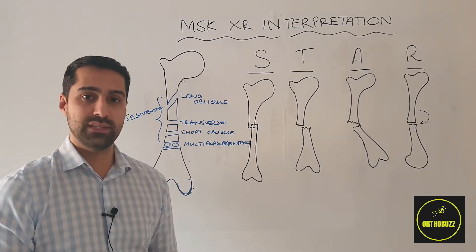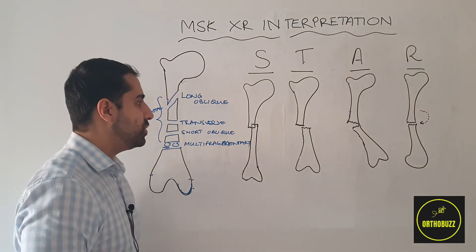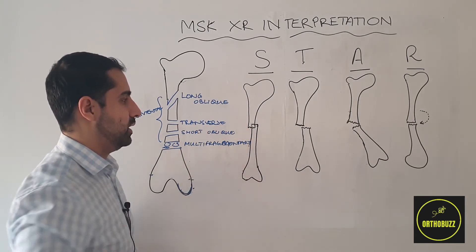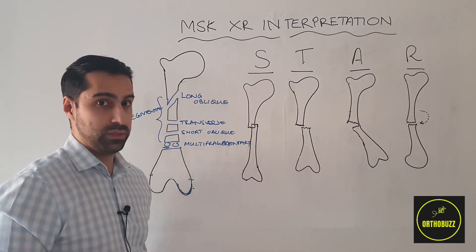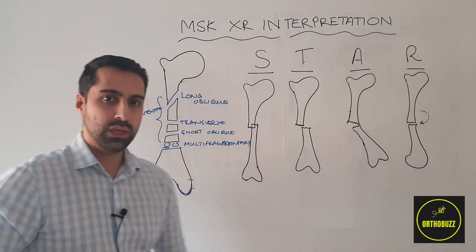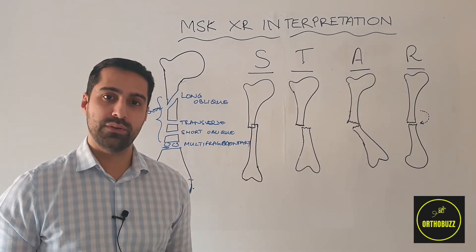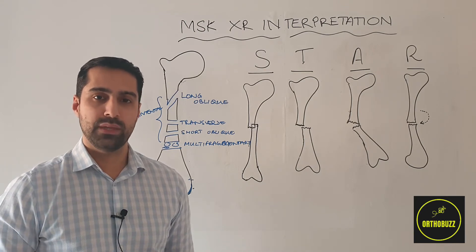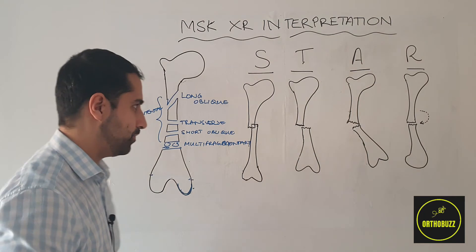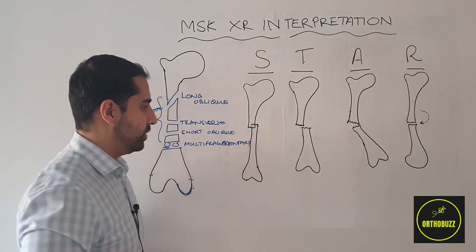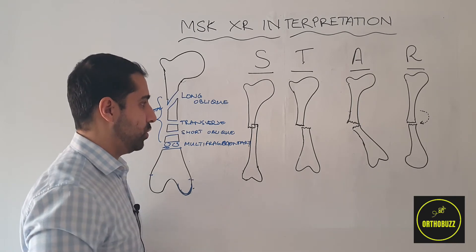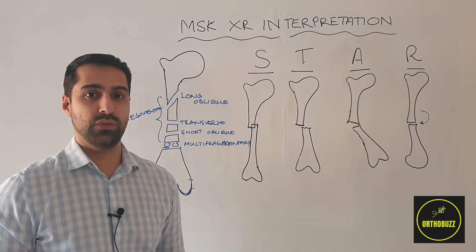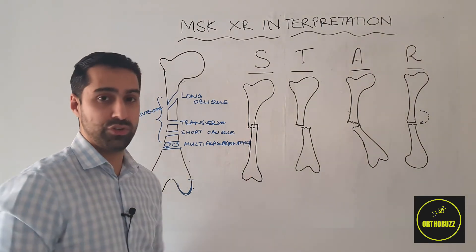Here we have a mid-diaphyseal transverse fracture where the two ends of the bones are shortened — the overall length of the bone is reduced. This is most often the case because muscles crossing the fracture contract, causing shortening of the bone ends. You can see this as overlapping on the x-ray and an overall reduction in the length of the bone. This can be described as mild, moderate, or severe shortening.